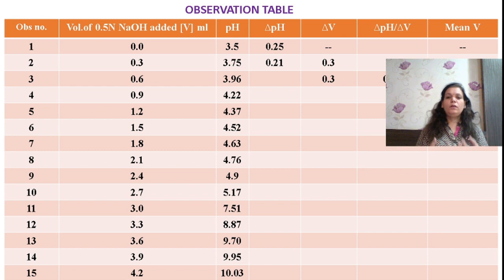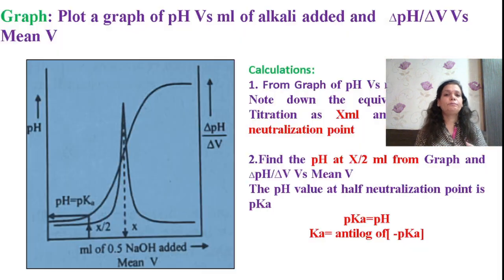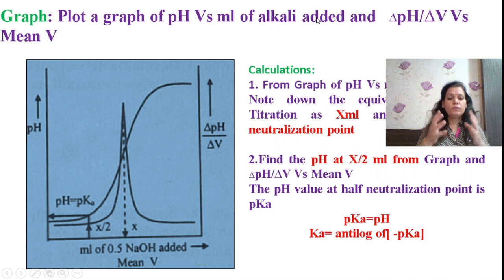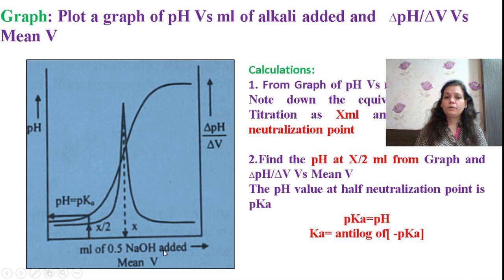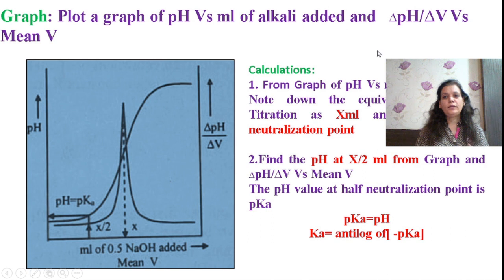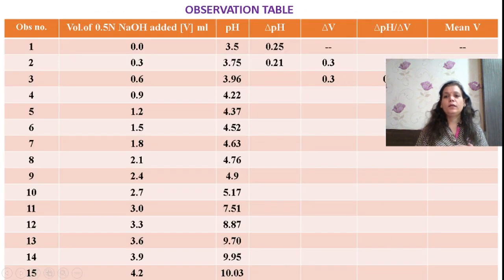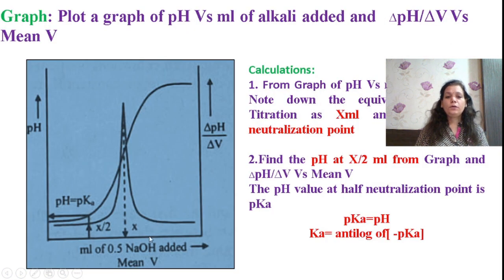Use these observations to calculate the pKa value. Draw a graph plotting pH versus volume of alkali added (the first two columns) to see how pH changes as alkali is added. On the same graph paper, plot a second graph of delta pH / delta V versus mean V, using two different scales — one for volume of 0.5 N NaOH added and one for mean V.